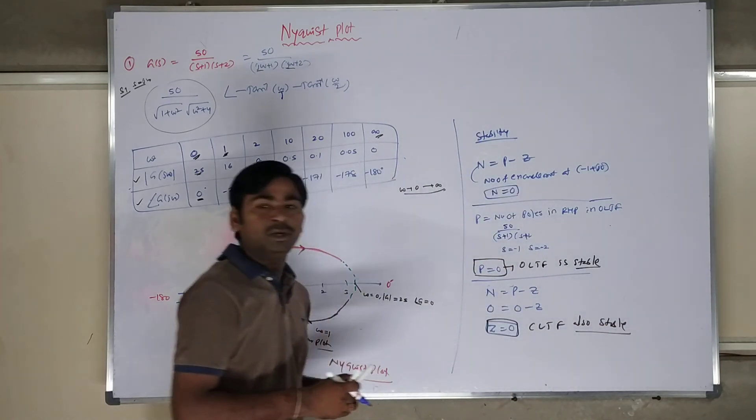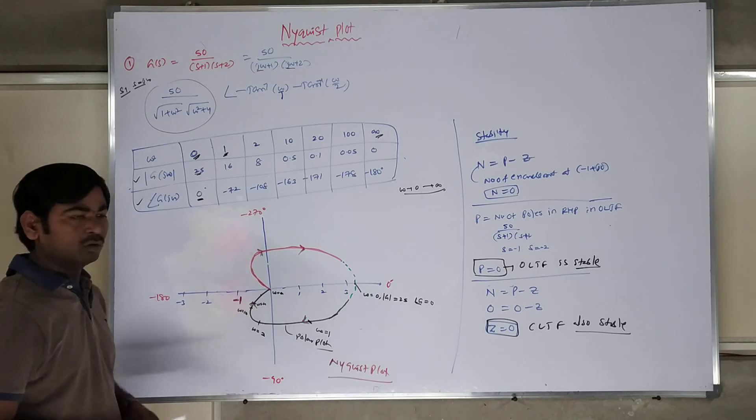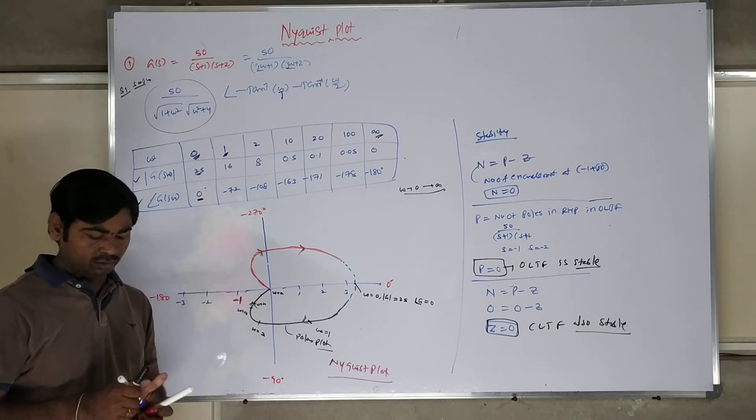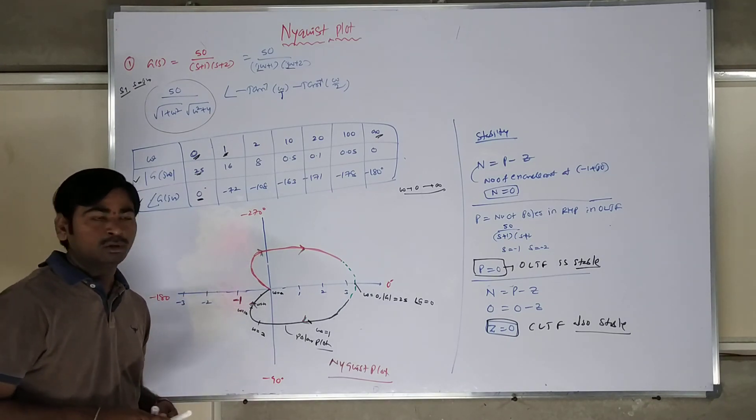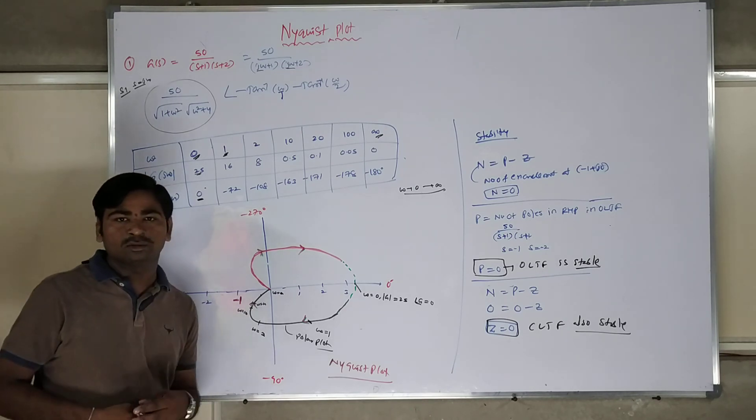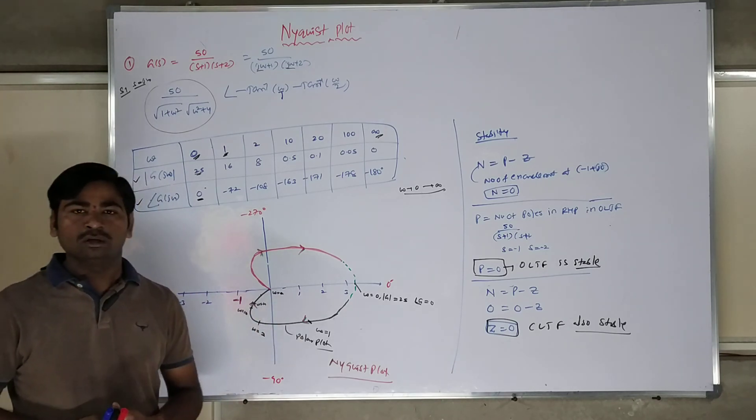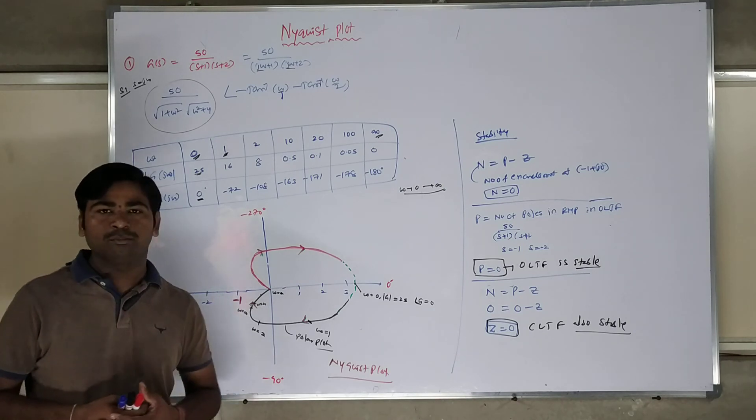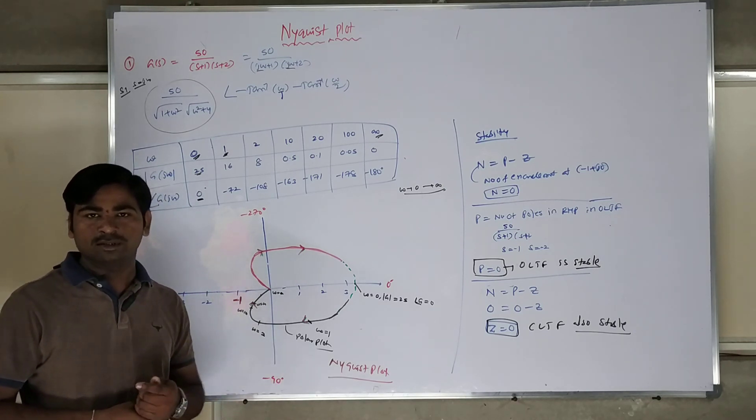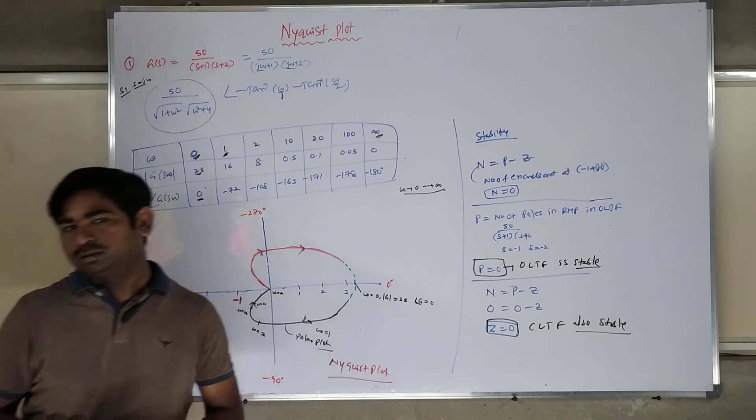Like this, finding P and Z values for a given system from the polar Nyquist plot, we can be able to find out the system stability conditions. This is the main problem. In the next class, I shall take complex problems. When you are going to say that, complexity will come in N equals P minus Z. That will be discussed in the next class. Thanks for watching. Keep watching.